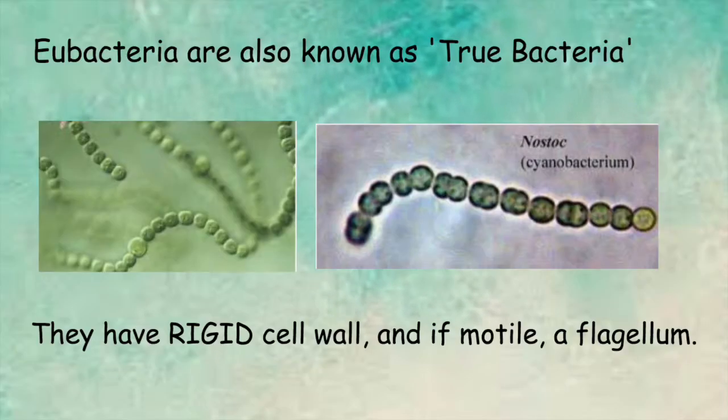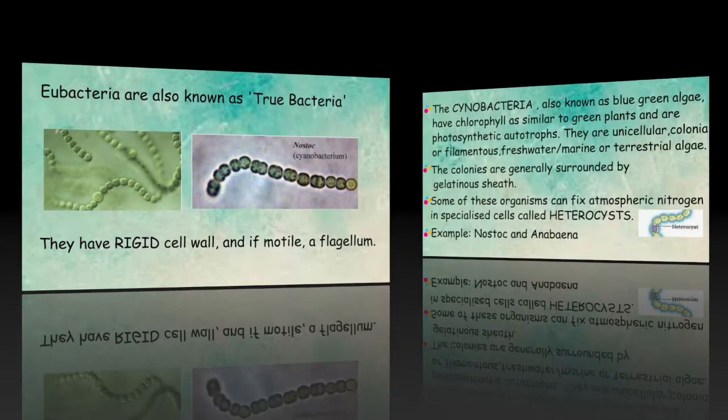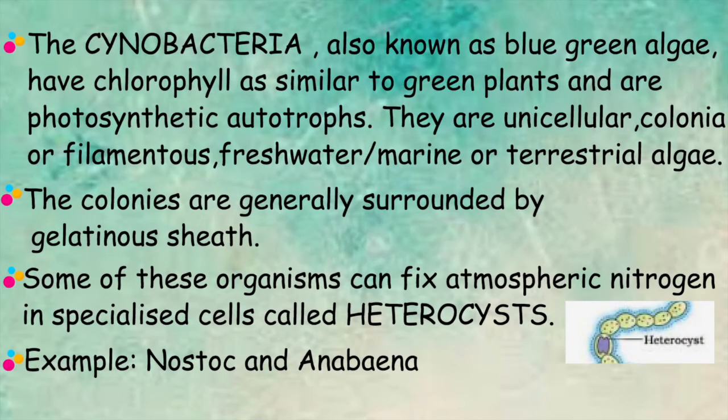Eubacteria are also known as true bacteria. They have a rigid cell wall, and if motile, a flagellum. The cyanobacteria, also known as blue-green algae, have chlorophyll similar to green plants and are photosynthetic autotrophs. They are unicellular, colonial or filamentous, and may be freshwater, marine or terrestrial algae.